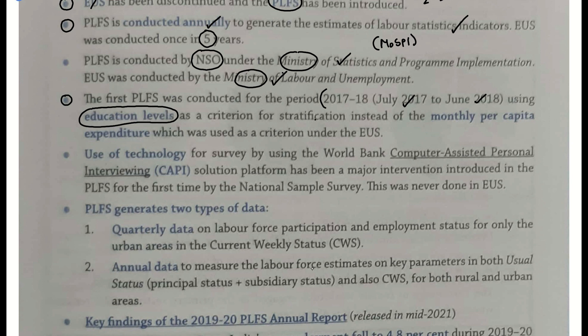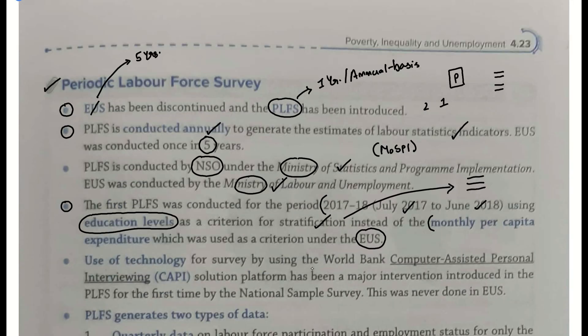Taaki hum log stratify kar sakein. Stratification ka matlab hota hai layering karna — top layer, middle layer, bottom layer. Humne yahan par monthly per capita expenditure ko avoid kiya. Is monthly per capita expenditure ko as a criteria use kiya jaata tha Employment and Unemployment Survey ke andar. Toh jo main aapse question upar bol raha hoon — chaar statement wala, paanch statement wala — unme yeh baat aa sakti hai ki Periodic Labor Force Survey ke andar education level ko use kiya jaata hai, aur pehle jo EUS hota tha usme monthly per capita expenditure use kiya jaata tha.